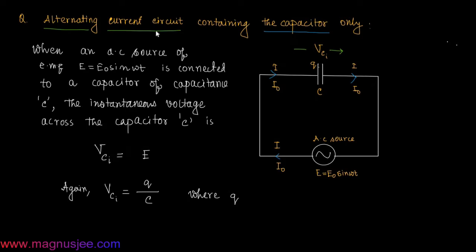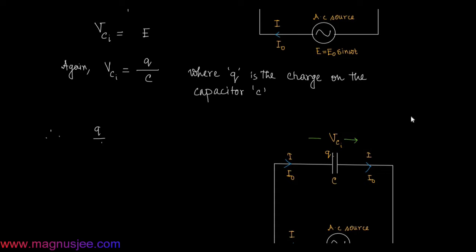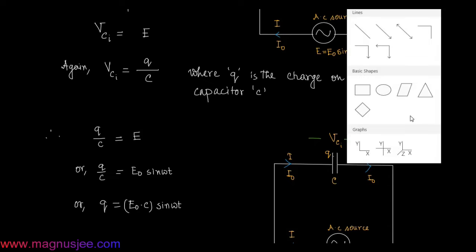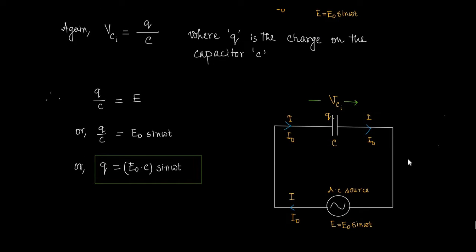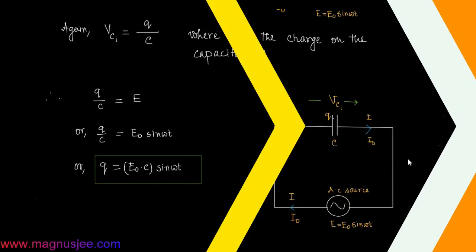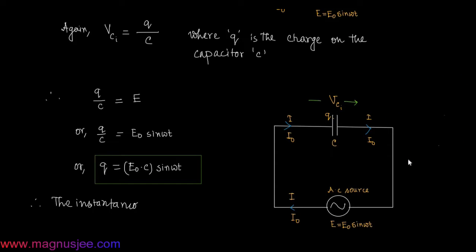Also, vc(i) = q/C, that is charge divided by capacitance, where q is the charge on the plate of the capacitor of capacitance C. Therefore, q/C = e, or q/C = e0·sin(ωt), giving us q = e0·C·sin(ωt). This is the charge on the plate of the capacitor.